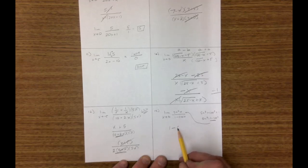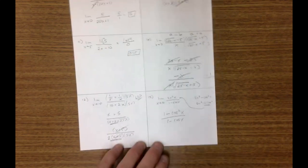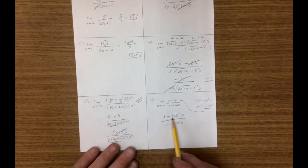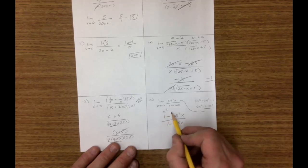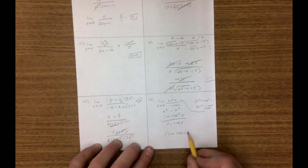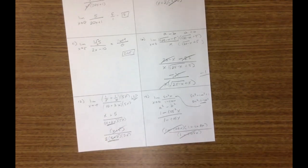1 minus cosine squared x over 1 minus cosine x. And now we get there and people get stuck. But again, what you see up here is a squared minus b squared. This is 1 minus cosine x, 1 plus cosine x, all over 1 minus cosine x. Those expressions can go away, and you're left with 1 plus cosine x. Do some direct substitution. You'll have your answer.